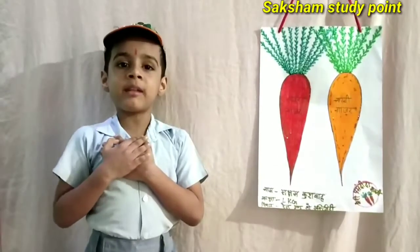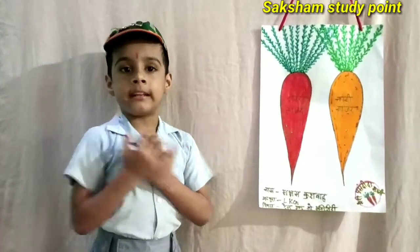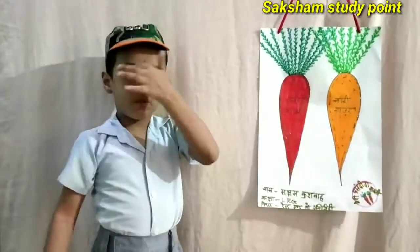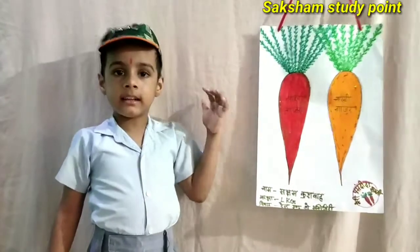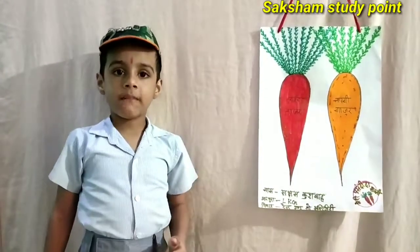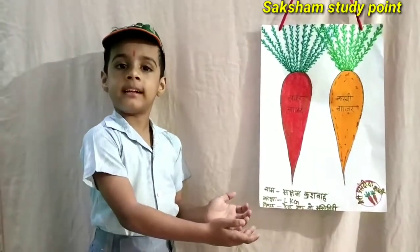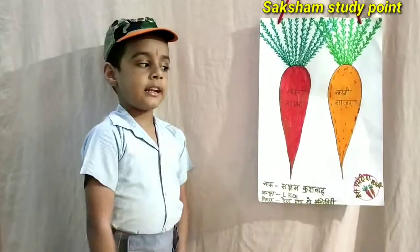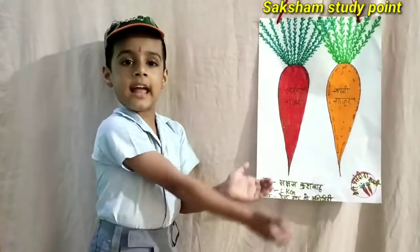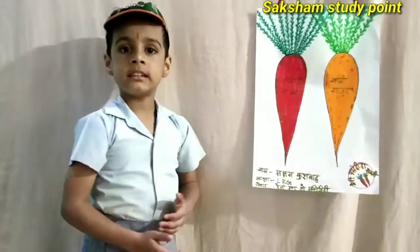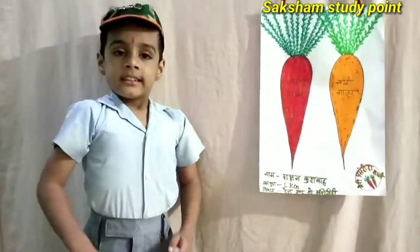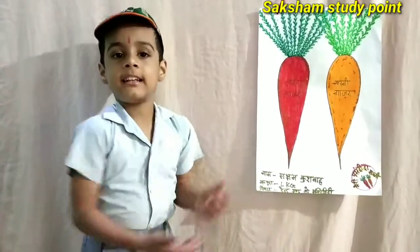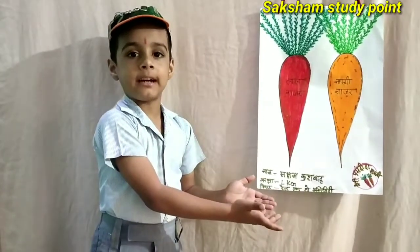My favorite vegetable is carrot. It is good for eyes. It is used in my dish. It is red and orange. It is a sweet and healthy vegetable.